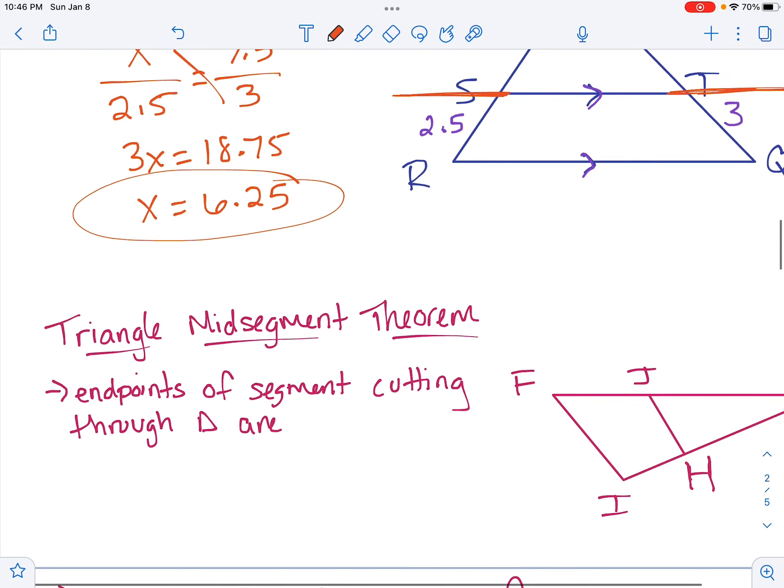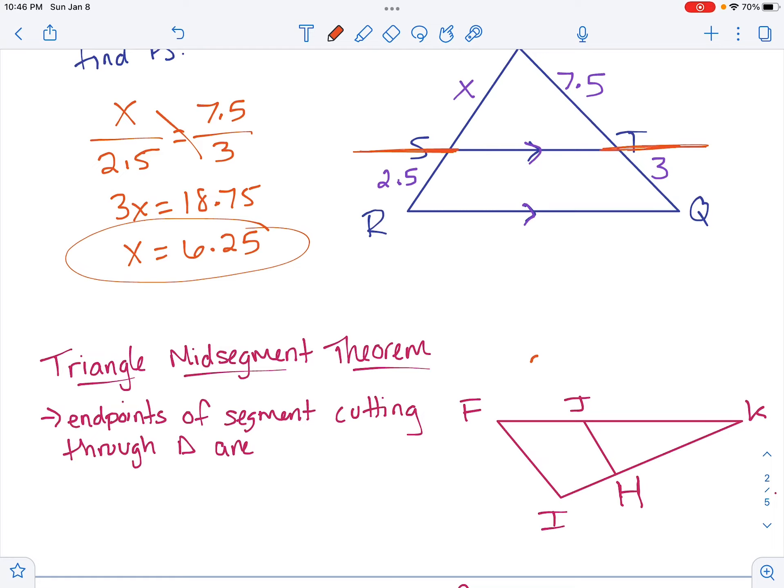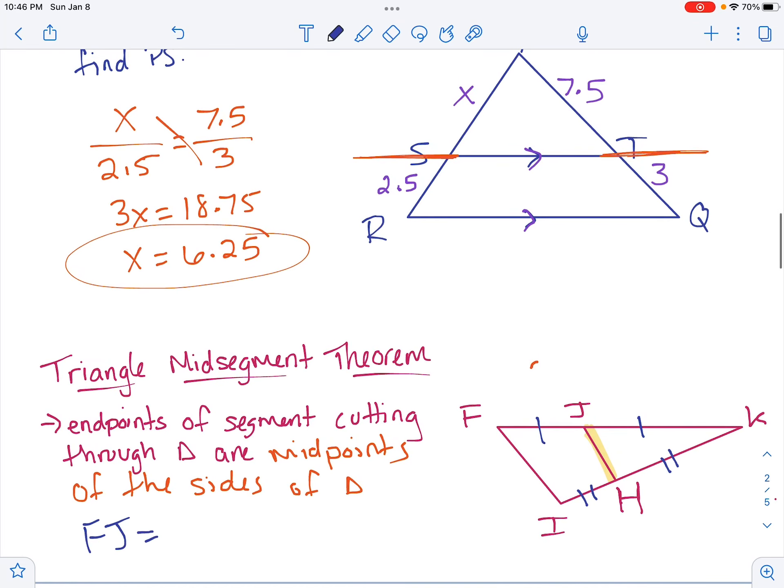The next thing we're going to look at is triangle mid-segment theorem. So if we have this picture, and we know that we have a mid-segment, the endpoints of the segment cutting through the triangle are the midpoints of the sides of the triangle. That means that if JH is a mid-segment, it's going to cut each side in half, which means these two sides are equal, and these two sides are equal. So FJ equals JK, and IH equals HK.